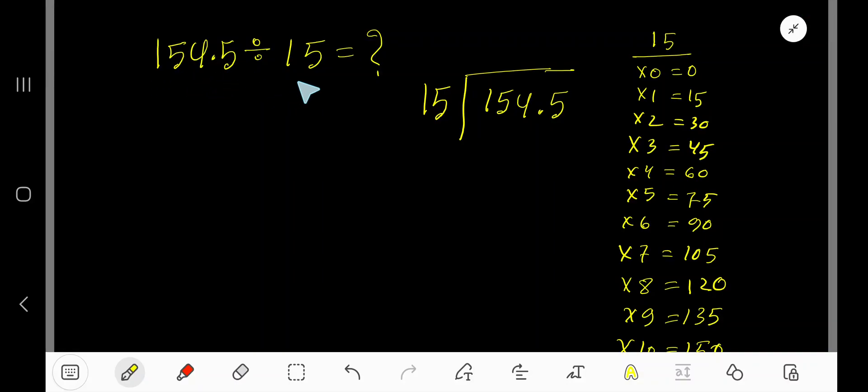154.5 divided by 15. Here 15 is a divisor, so we need the multiplication table of 15. 15 times 0 is 0, 15 times 1 is 15, 15 times 2 is 30, 15 times 3 is 45, 15 times 4 is 60, 15 times 5 is 75.